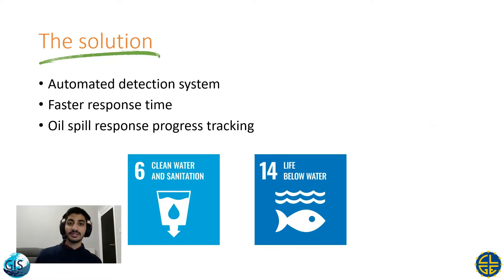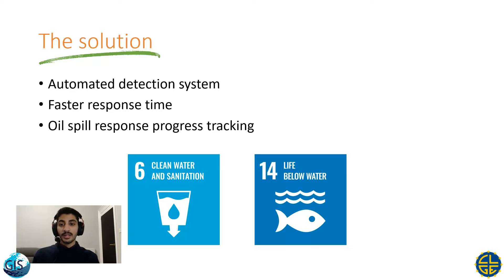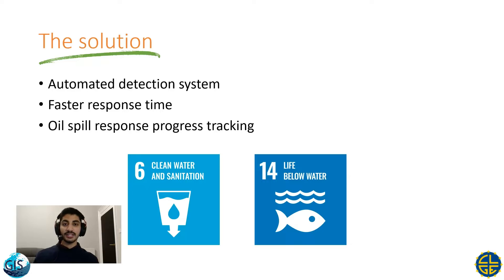So what is the solution? The ideal solution would be to prevent oil spills from happening in the first place. However, if we can't do that, then our second best solution would be to develop an automated detection system that will enable us to respond to oil spills in a timely manner and also allow us to track the progress of the oil spill over time. This is exactly the aim of my project, and it is an example of how we can use geospatial data to help tackle the United Nations Sustainable Development Goals 6 and 14.